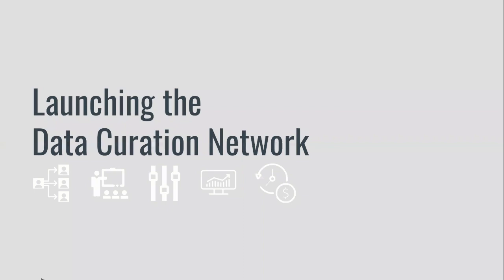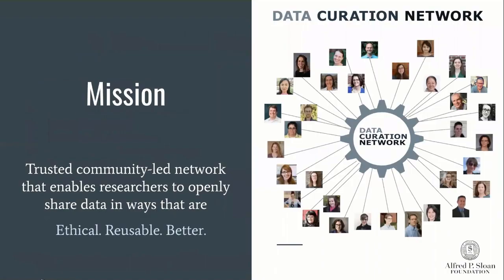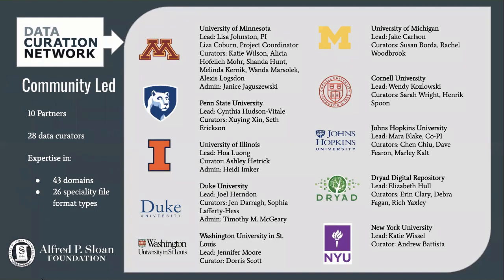Let me now shift to what is the Data Curation Network. The DCN is a shared staffing model for curating research data. Our mission is to enable researchers to better ethically share their research data. Right now we have 10 institutions involved: nine are academic institutional repositories that accept and curate data, and the 10th is the Dryad Data Repository. We've got 28 data curators who bring expertise in 43 domains and 26 specialty file types.